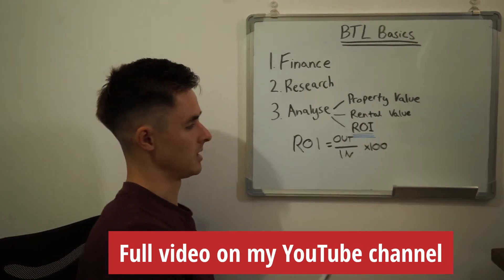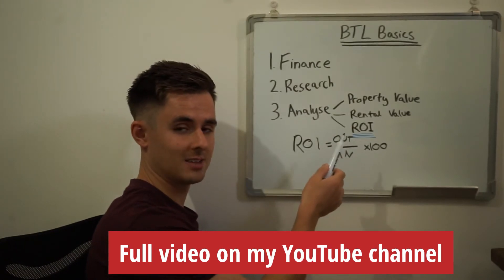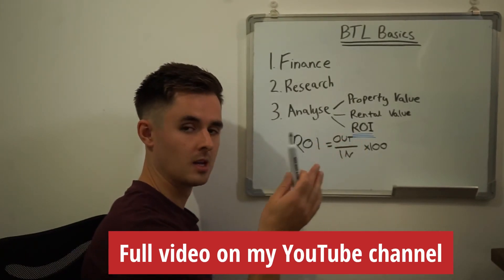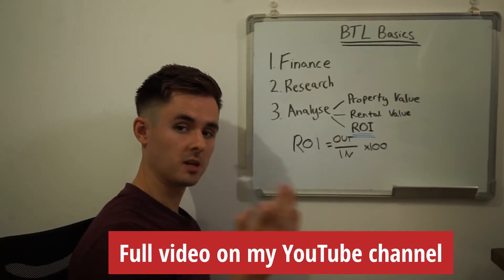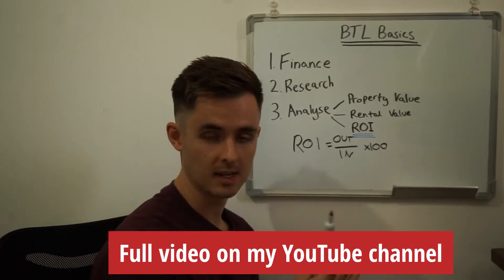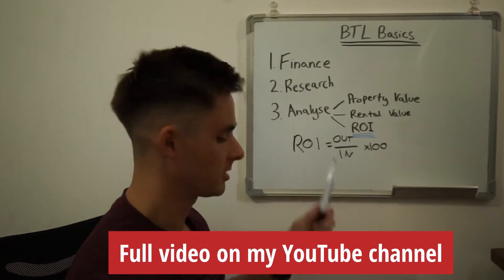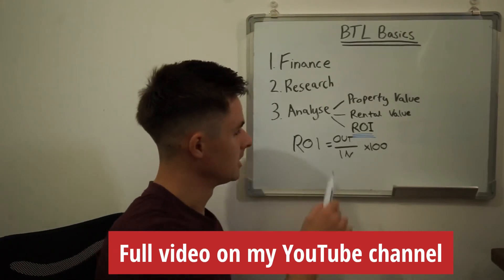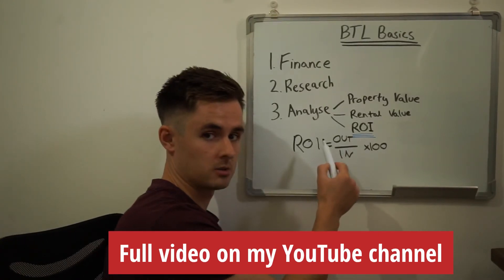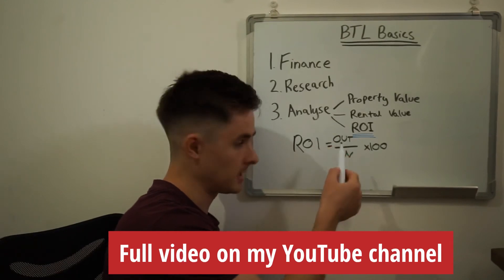So the money out is going to be 12 months' worth of rent. Again, there will be vacancies potentially over that period — it's unlikely that you're going to pick up the keys on the completion date and have a tenant moving in the next day. So this is just ignoring those different factors. The money out is £300 a month times 12, so that's £3,600.